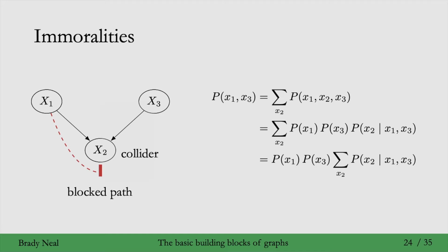And then this just sums to 1. We're summing over x2 for some conditional distribution over x2. And that sums to 1, so we get what we wanted. We get that P of x1 comma x3 factorizes as P of x1 times P of x3. In other words, x1 and x3 are independent.